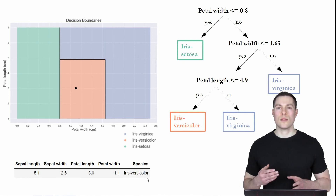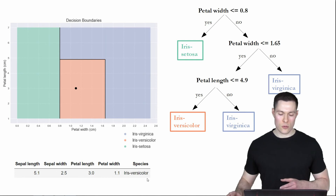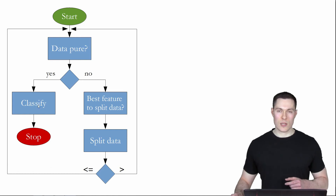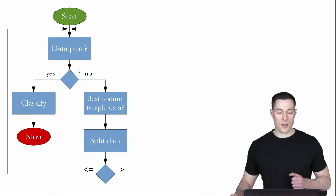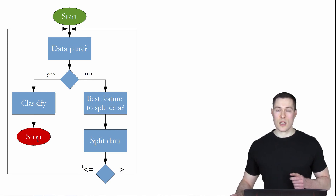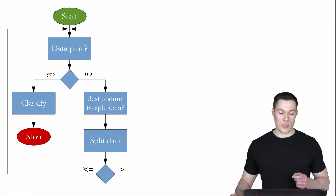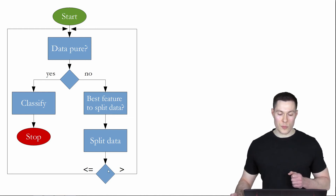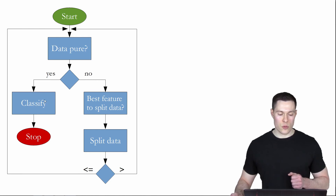The process or algorithm we went through to create those boundaries looks like this: First, check if the data is pure. If it is, classify it and stop — those data points no longer need to be considered. If it is not pure, find the best feature to split the data, then split it into two parts: one containing data points with values smaller or equal to that feature, and the other containing data points with values larger. Then repeat this process for both parts, continuing until all parts are eventually pure and reach the stop.